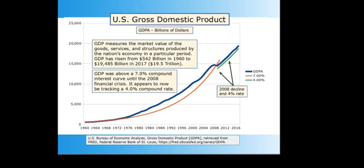The US gross domestic product measures the market value of the goods, services, and structures provided by the nation's economy in a particular period. GDP is a measure of money transactions based upon prices. The concept of money velocity is a measure of the turnover of money in the economy; the formula is V equals GDP divided by money. GDP has risen from $542 billion in 1960 to $19,845 billion in 2017. GDP was above the 6.6% compound interest curve until the 2008 financial crisis, and it appears to now be following a 4% compound rate.